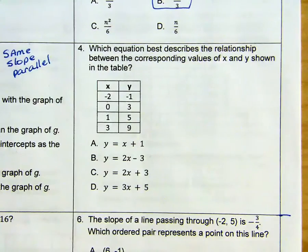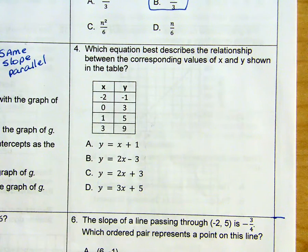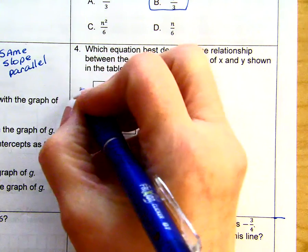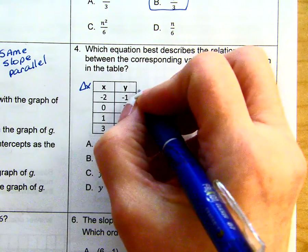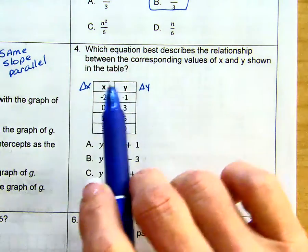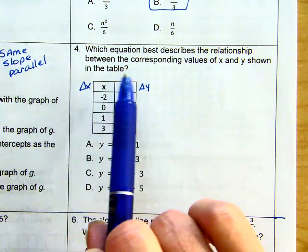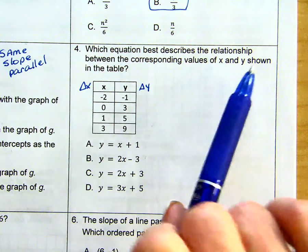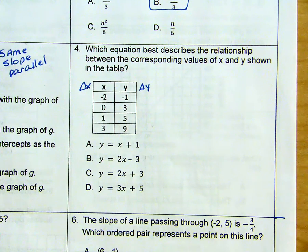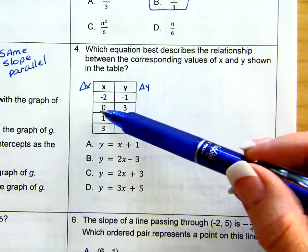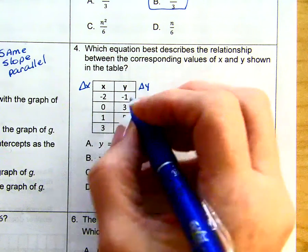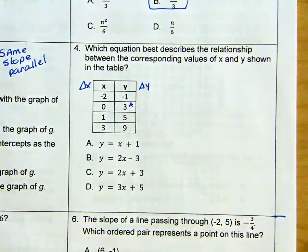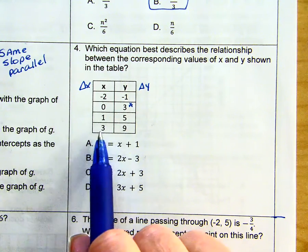And the final problem for this particular video will be problem number 4. And we have a couple of ways to work this one out. So I'm going to do this by hand first, and then I'll show you in the calculator. So we can look for our change in x and our change in y. It says which equation best describes the relationship between the corresponding values of x and y shown in the table. So looking at the table, we have negative 2, negative 1, 0, 3. So this is important. This is our y-intercept. And then we have a 1, 5, and a 3, and a 9.